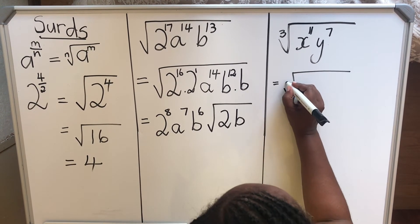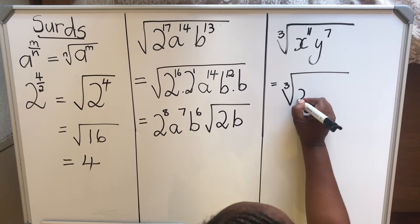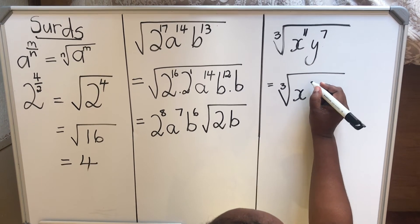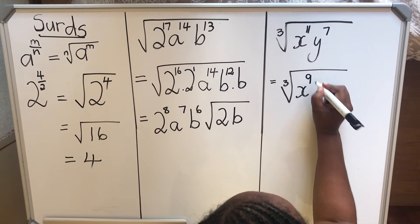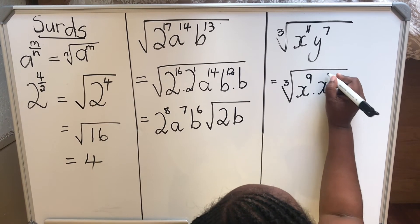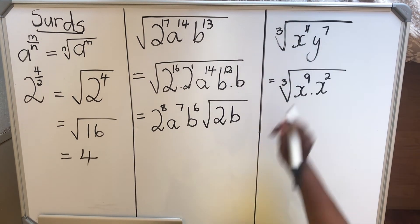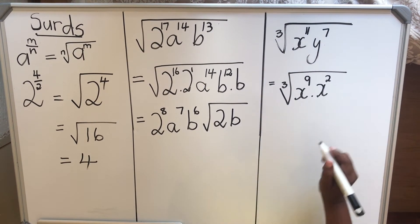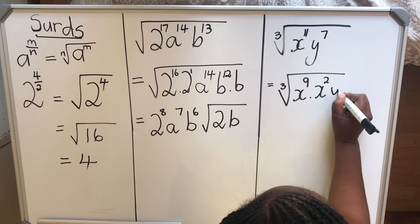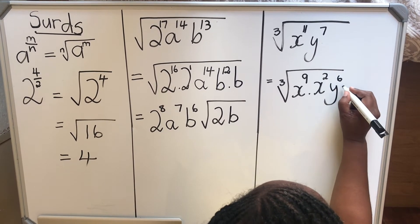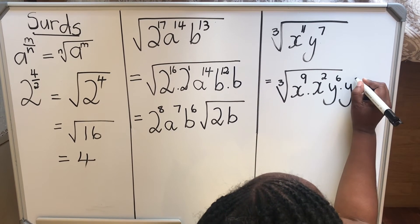So here, don't forget to write the 3. I'll have x to the power 9 and x to the power 2. 9 plus 2 will give you the 11. And then we have y to the power 6 times y to the power 1.